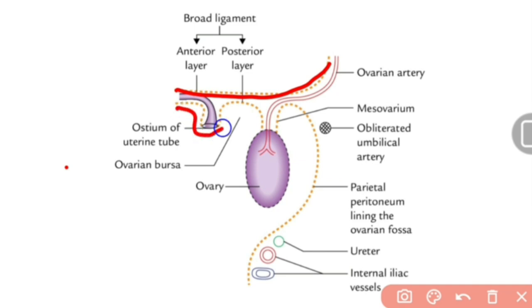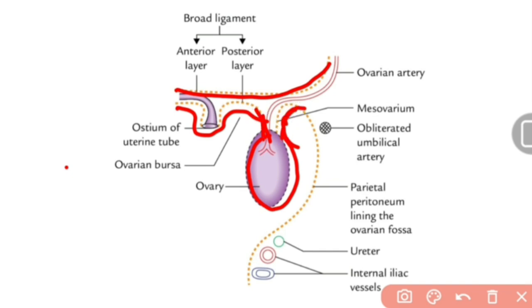The ovary is covered by peritoneum, but along the meso-ovarium the peritoneum is reflected and becomes continuous with the posterior layer of the broad ligament, forming the meso-ovaries. This is also known as the hilum or opening of the ovary, through which ovarian vessels and nerves enter and exit.